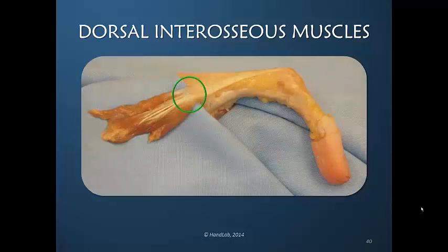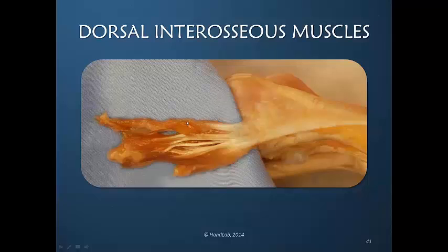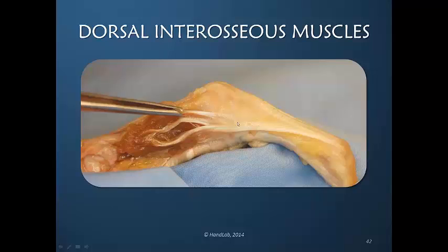Looking at this cadaver specimen, we see clearly that the anatomy is more complex than what we reviewed. We see multiple interosseous bellies — three visible — and we see multiple tendons, not just one. These tendons are actually inserting into different portions of the dorsal apparatus. As we pull on the tendons, we can see their tension directed into different parts of the dorsal apparatus.